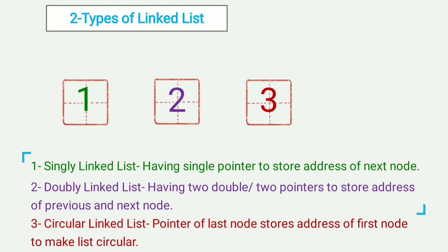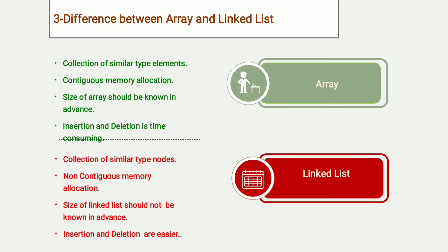There are three types of linked list. First is singly linked list, having a single pointer to store the address of the next node. In doubly linked list, it has two pointers to store the address of the previous and next node. Third is circular linked list, in which the pointer of the last node stores the address of the first node to make the list circular. In the third video I will tell you the difference between array and linked list.